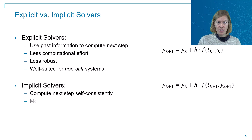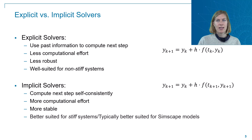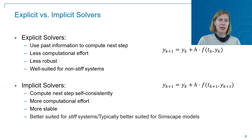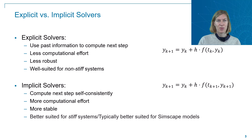In contrast, implicit solvers compute the next time step by using an equation that contains both the previous and the next time step. This typically presents with more computational effort, but also more stability. Implicit solvers are better suited for stiff systems, which also makes them better suited for Simscape networks.